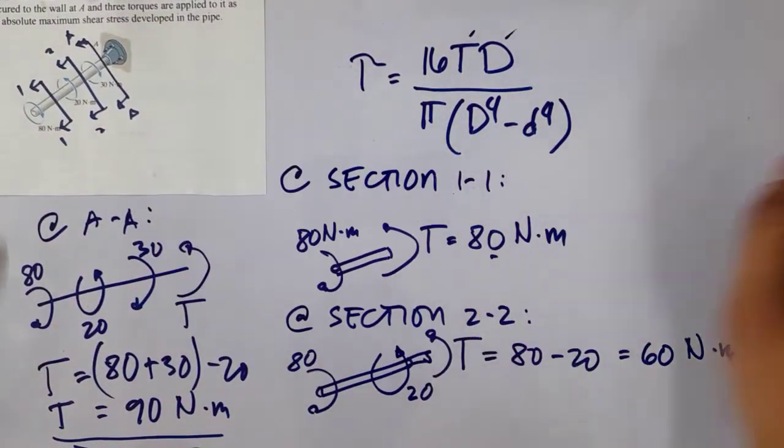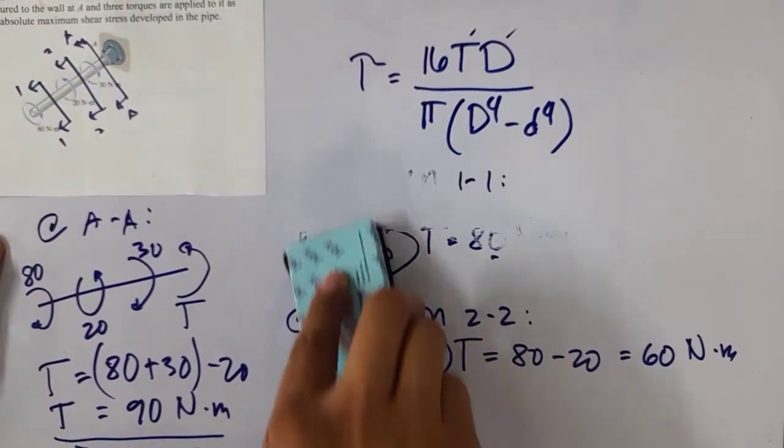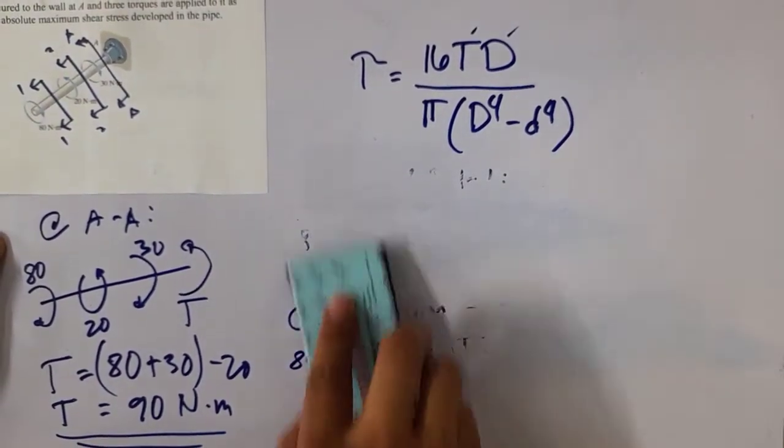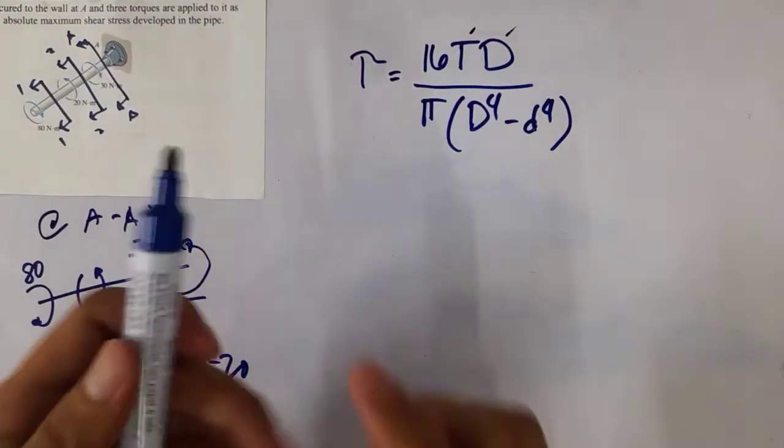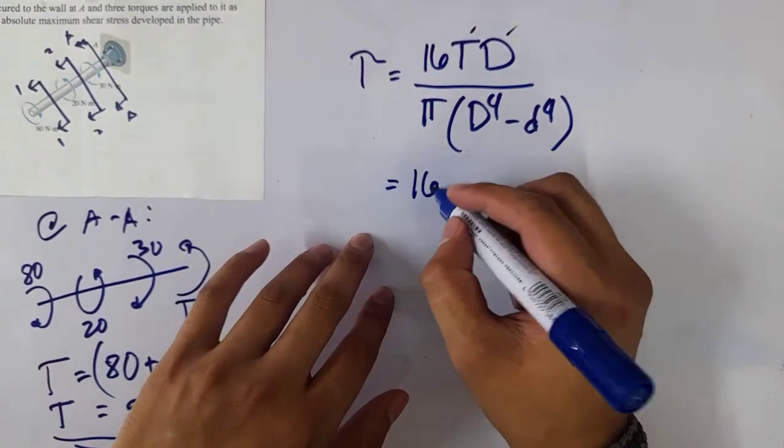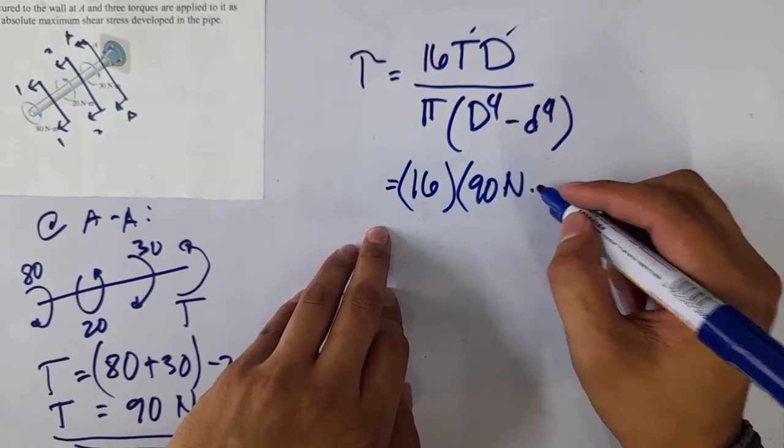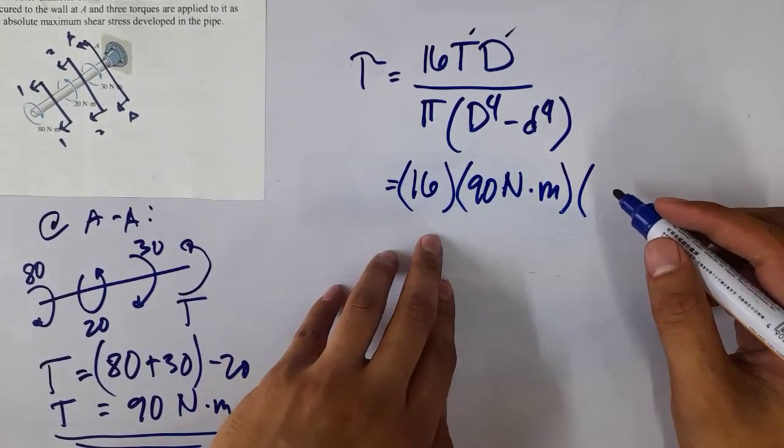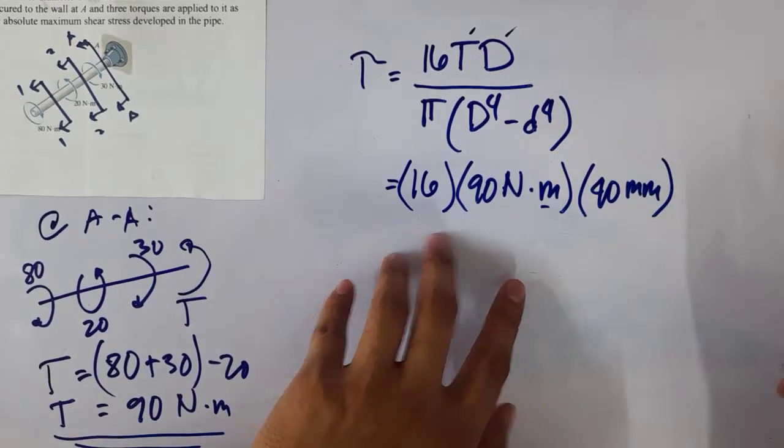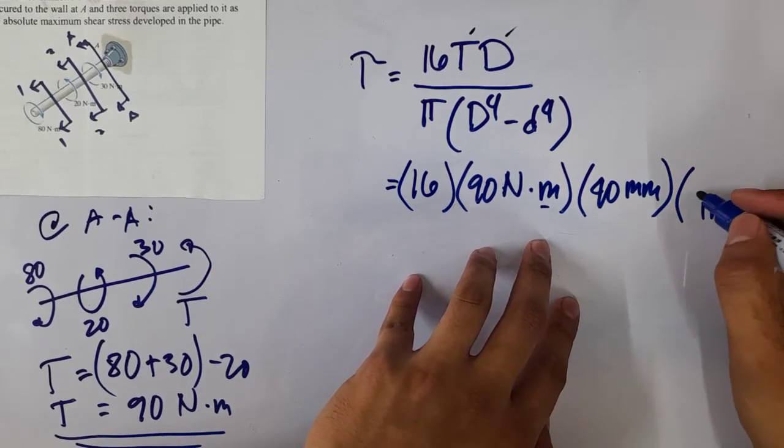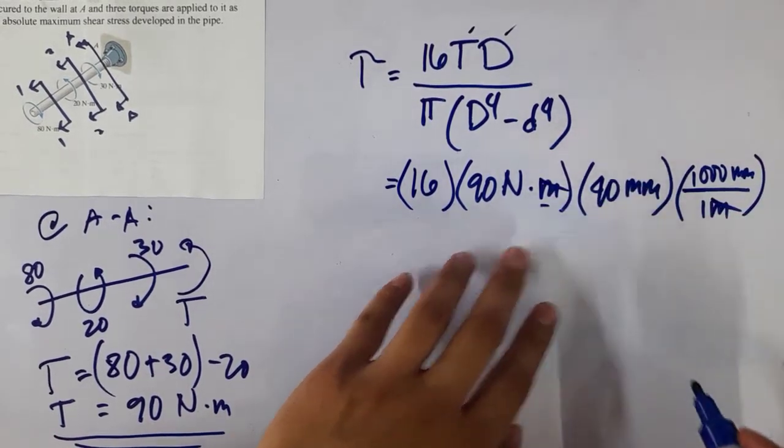To solve for the maximum shearing stress, or the maximum torsional shearing stress, we will use the 90 N·m. Just plug in the values. We have 16 times 90 N·m times the diameter, which is 40. We have to convert meter to millimeter, so 1 meter is 1000 mm.